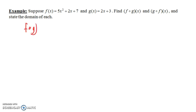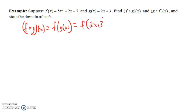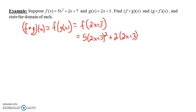F circle g of x equals f of g of x, and that equals f of 2x plus 3, since g of x is 2x plus 3. So what is f of 2x plus 3? Just like finding f of any number, we plug 2x plus 3 in everywhere we see an x. So instead of 5 times x squared, this becomes 5 times (2x plus 3) squared, plus 2 times (2x plus 3), plus 7.